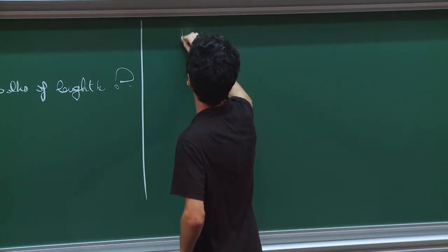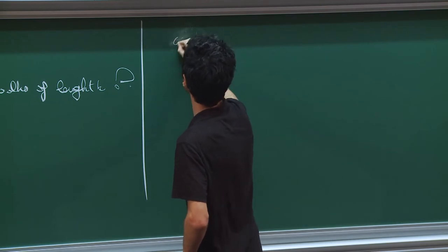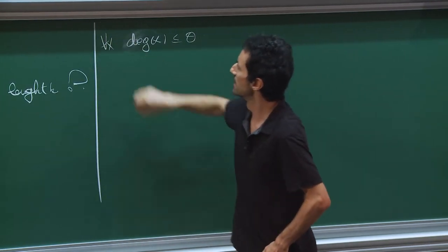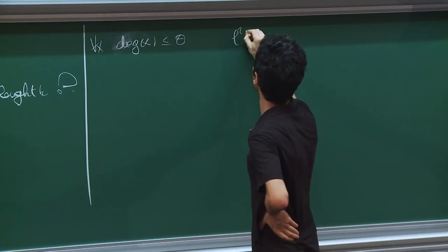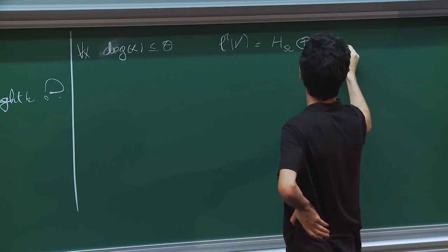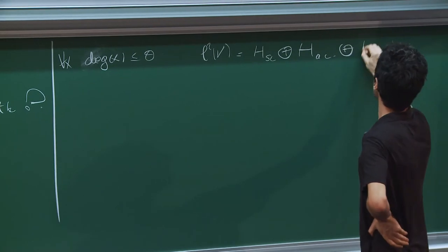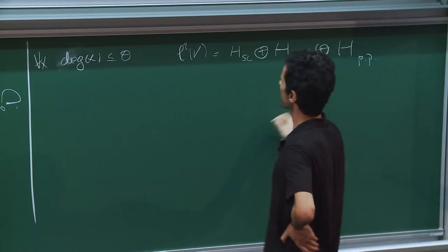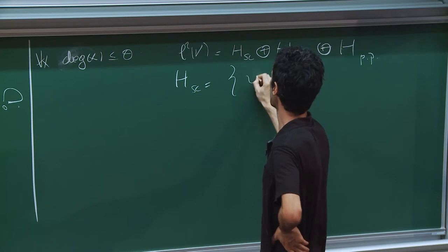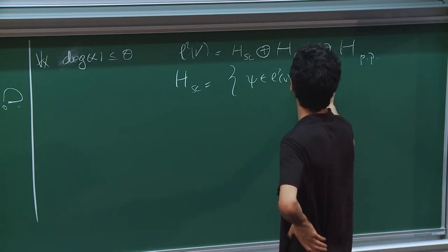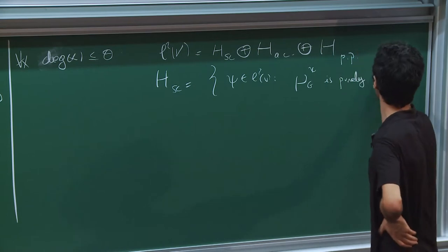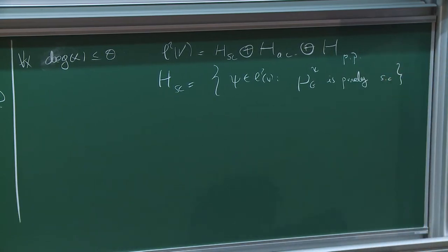If I assume that the degree is uniformly bounded, for simplicity, then my operator is bounded and there is an orthogonal decomposition of L². For example, H_sc is the set of vectors psi in L²(V) such that mu_{G,psi} is purely singular continuous.